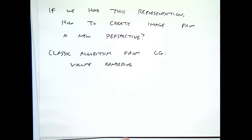To create an image from a new perspective using this representation, you use a classical computer graphics problem called volume rendering. Volume rendering is not the same as ray tracing — we're not representing the 3D object with a surface to bounce reflections off of. Instead, the object is emitting light from all directions, and we're integrating how much of that light should reach the camera from a given position. It's kind of like the inverse of ray tracing — there's only one ray, the ray from the camera going out through the image.